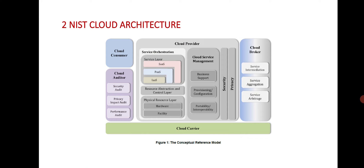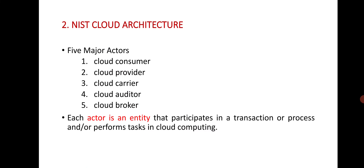See the conceptual reference model in the image. There are several actors available in NIST cloud architecture. The actors are: first, cloud consumer; second, cloud provider; third, cloud carrier; fourth, cloud auditor; and fifth, cloud broker. Each actor is an entity that participates in a transaction or process and performs tasks in cloud computing.